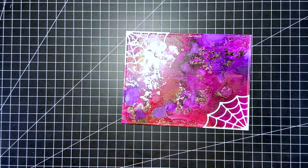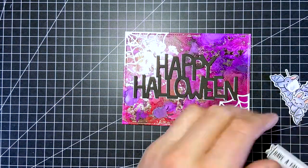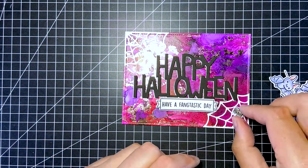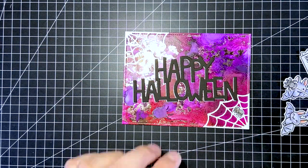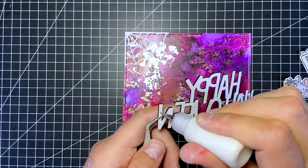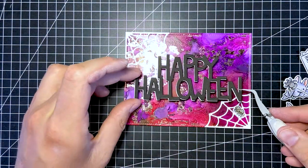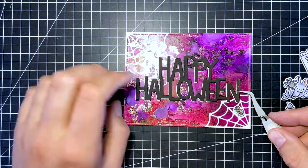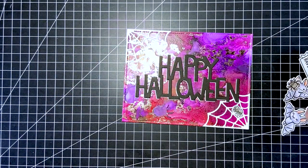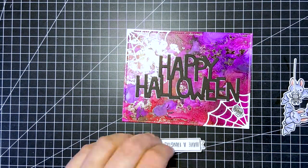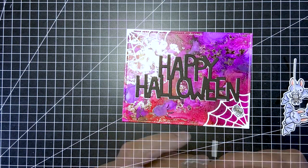Now I place the big sentiment and the sentiment banner together with the spider to check if that would be the right spot to adhere it. When I know it is, I adhere the big sentiment with liquid glue first. Then I adhere the sentiment banner with foam tape and the spiders with liquid glue.